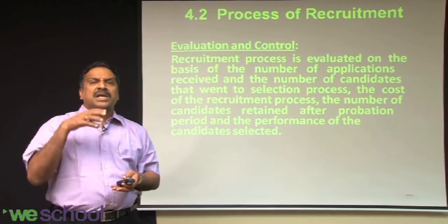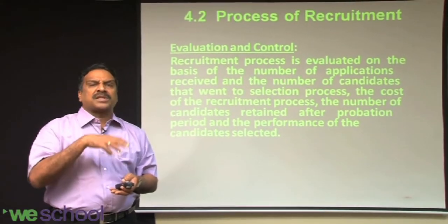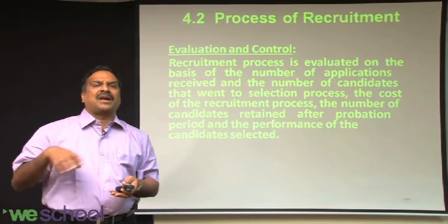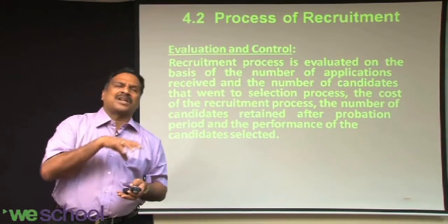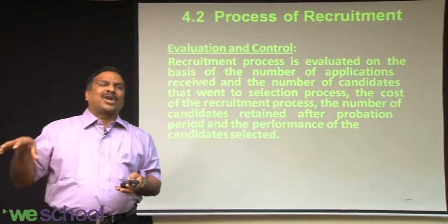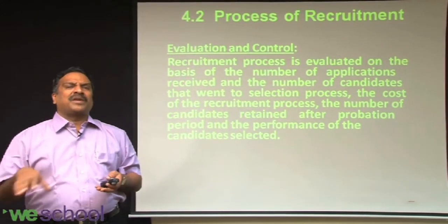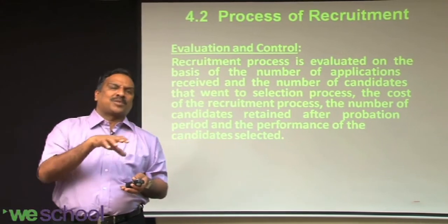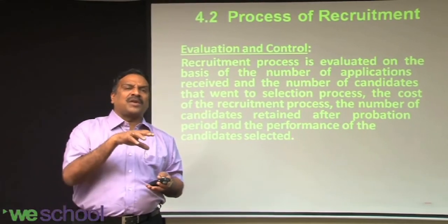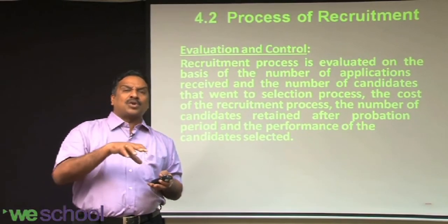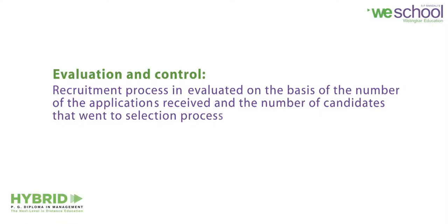However, if 1000 applications come in but only 50 to 200 proceed to selection, that is not a good sign. It means somewhere in the recruitment process something has been lost — it could be the communication, the way the job specification sheet is structured, or how the job analysis was conducted.